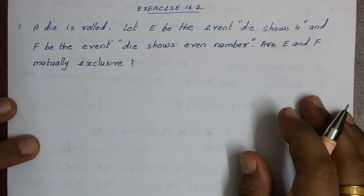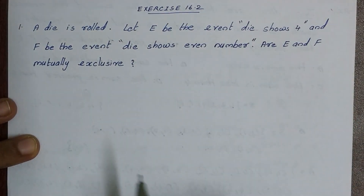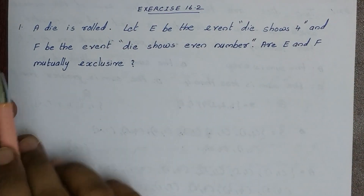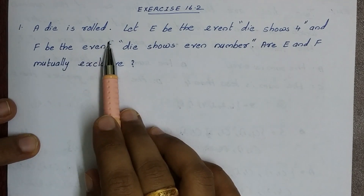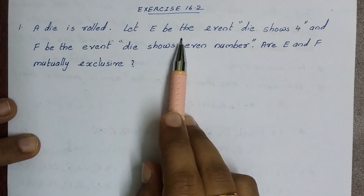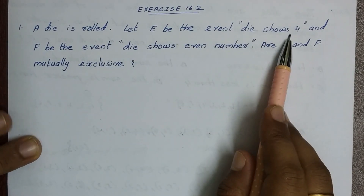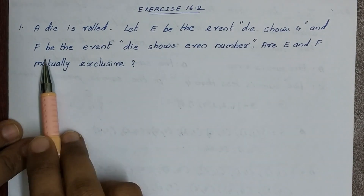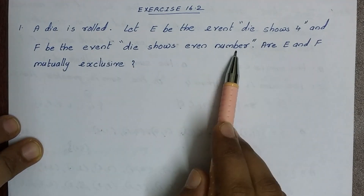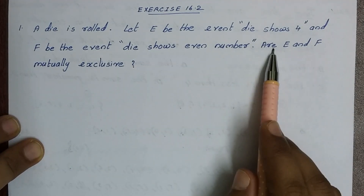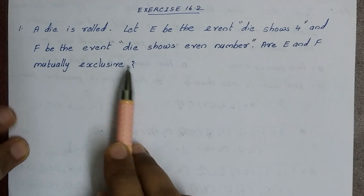Hi students, this is 16.2 problem. First question: a die is rolled. Let E be the event the die shows 4, and F be the event the die shows an even number. Are E and F mutually exclusive?